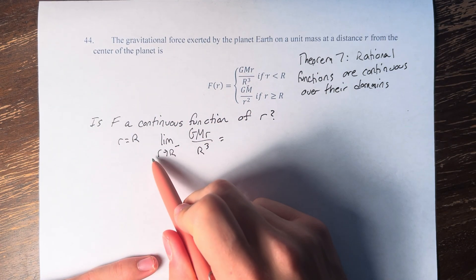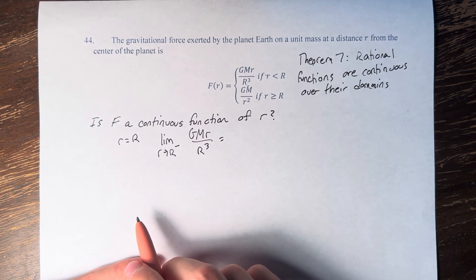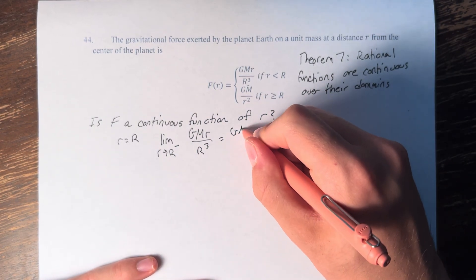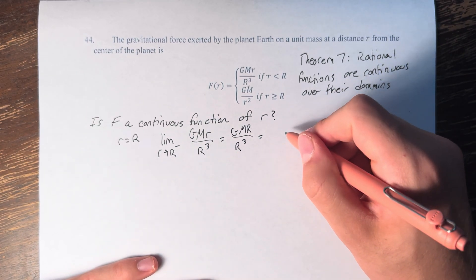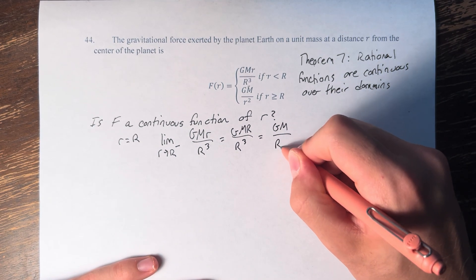And this is going to be equal to simply plugging in big R. So we have GMr over r cubed, r and r cubed cancel to give you GM over big R squared.